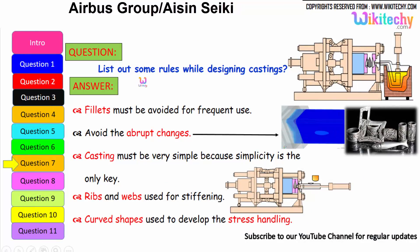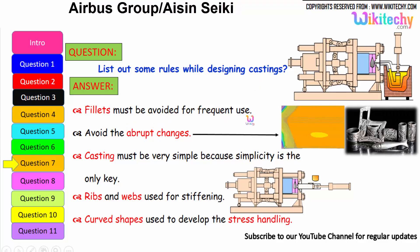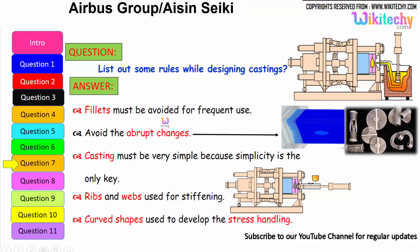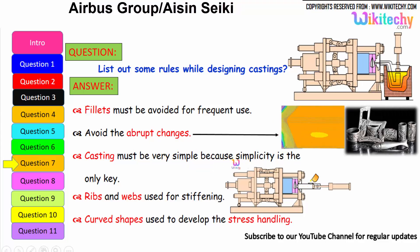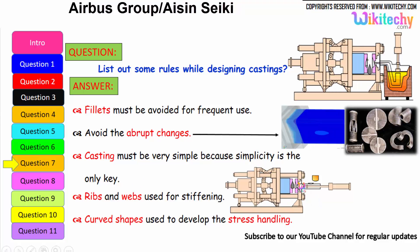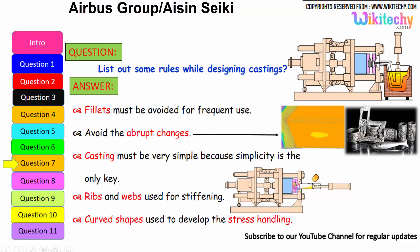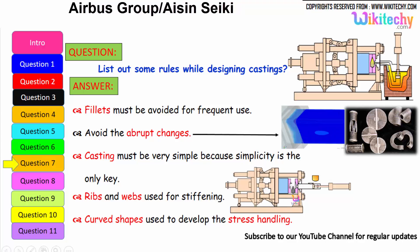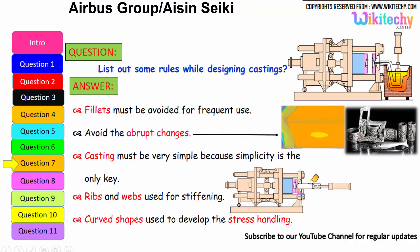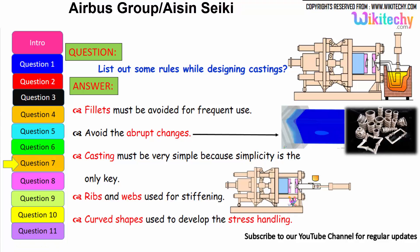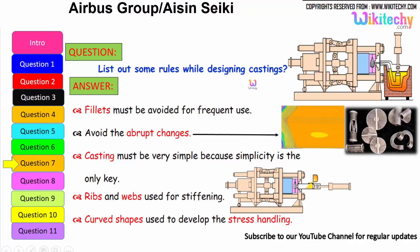Let us see some of the rules while designing castings. Fillets must be avoided for frequent use — that is the first one. Avoid abrupt changes; design should not change abruptly. Castings must be very simple, because simplicity is the key. Ribs are used for stiffening, so you should incorporate ribs in the design. The curved shape should be used to develop stress handling — it should be a curved shape to avoid stress concentration. These are all some of the rules we have to follow for castings.